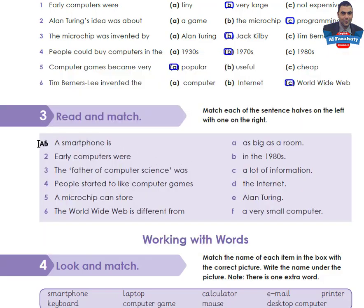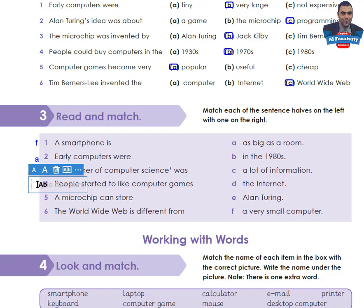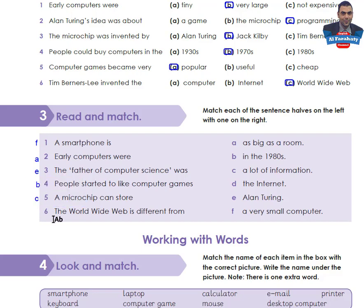Let's check the matches. A smartphone is — F: a very small computer. Early computers were — A: as big as a room. The father of computer science was — E: Alan Turing. People started to like computer games — B: in the 1980s. A microchip can store — C: a lot of information. The World Wide Web is different from — D: the internet.